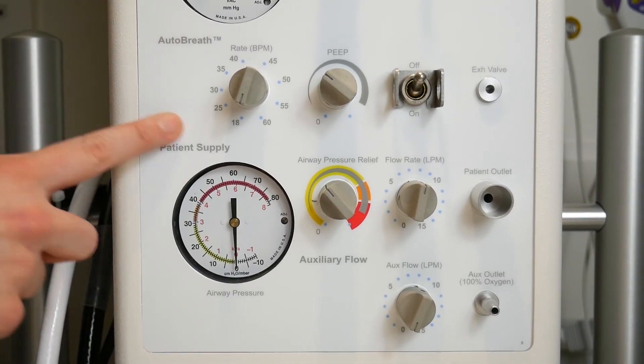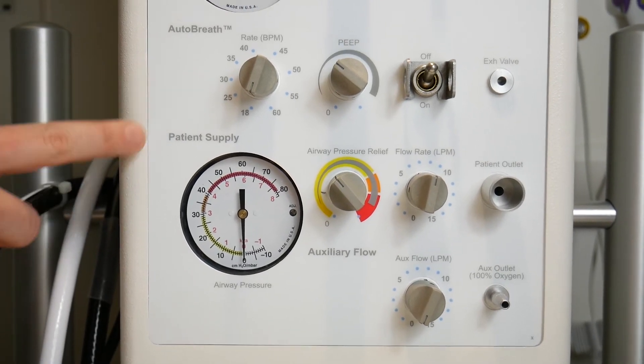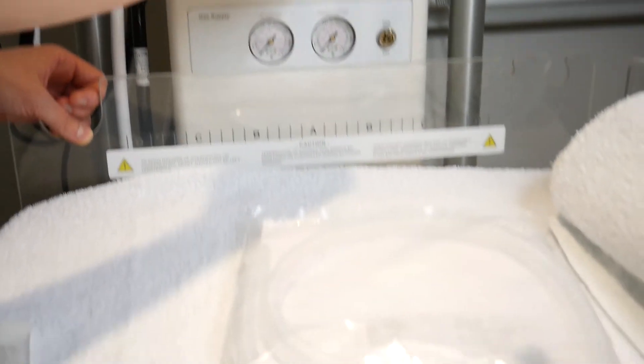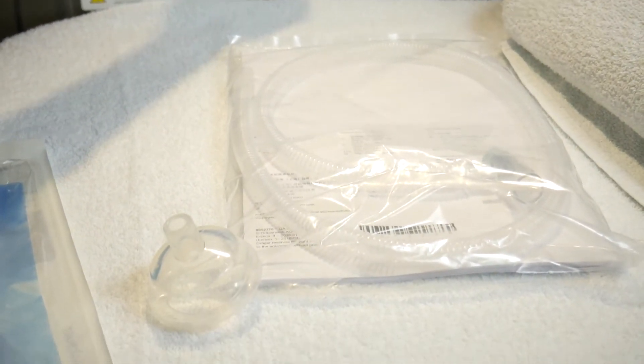This large panel corresponds to the ventilation settings. A T-piece can be attached to the auxiliary gas port here. You will have already set the FiO2 with the dial above.